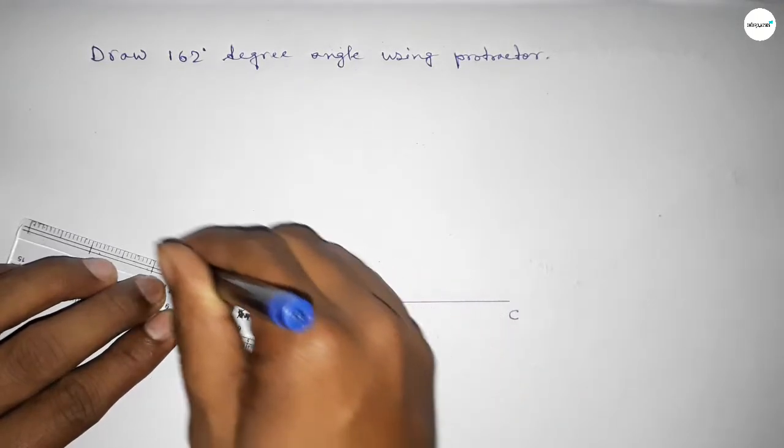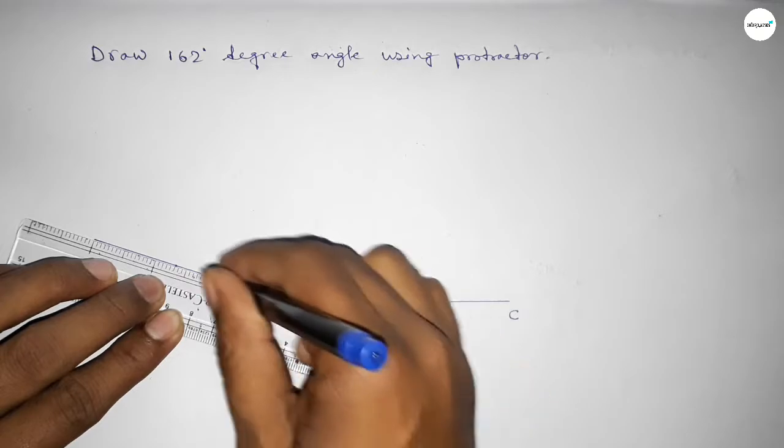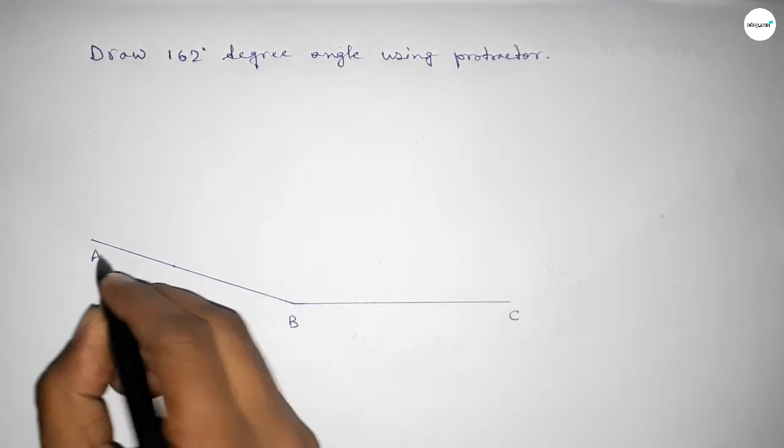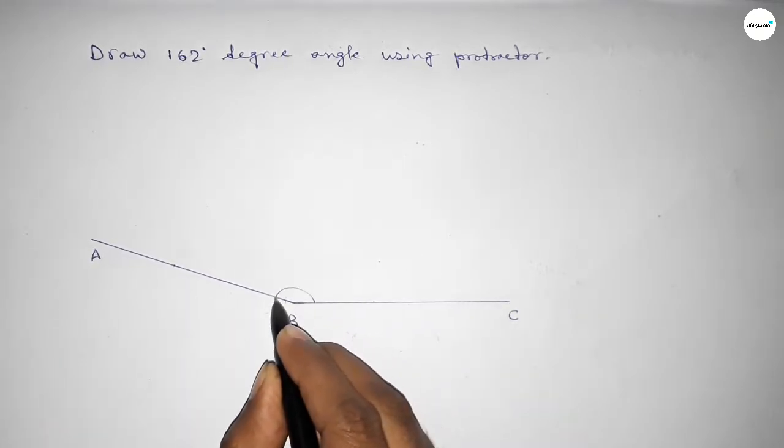Now we have to join this to get 162 degree angle. So now taking here a point, so angle ABC up to this is 162 degree angle.